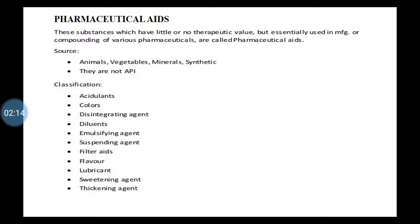Pharmaceutical aids are substances which have little or no therapeutic value. Therapeutic value means the use in any disease or disorder when the drug is used — that is therapeutic activity. These substances don't have therapeutic value, but they are very essential in manufacturing or compounding of various pharmaceuticals or formulations — meaning tablets, capsules, syrups. Without these substances, no formulation can be prepared. That is the meaning of pharmaceutical aids.